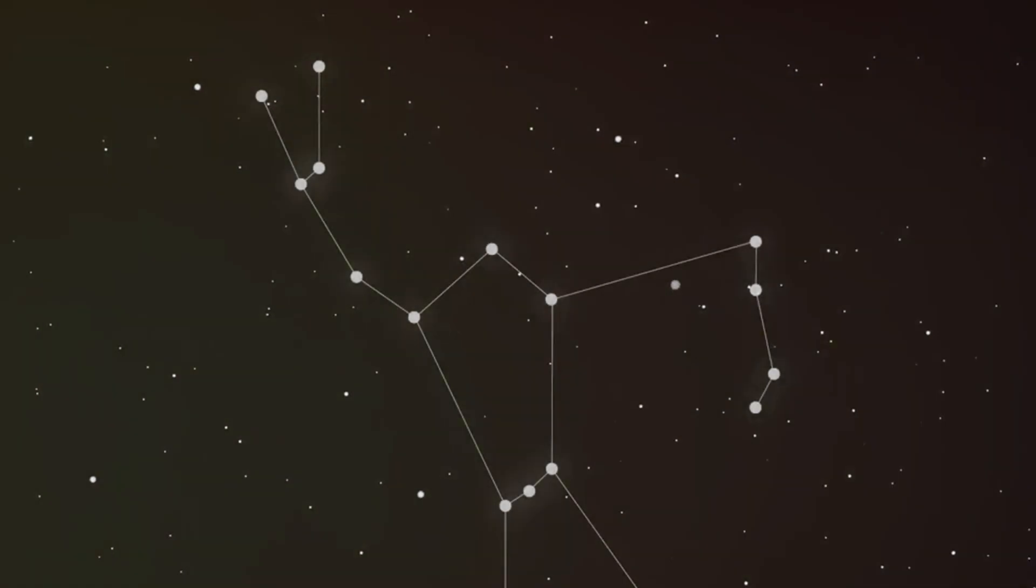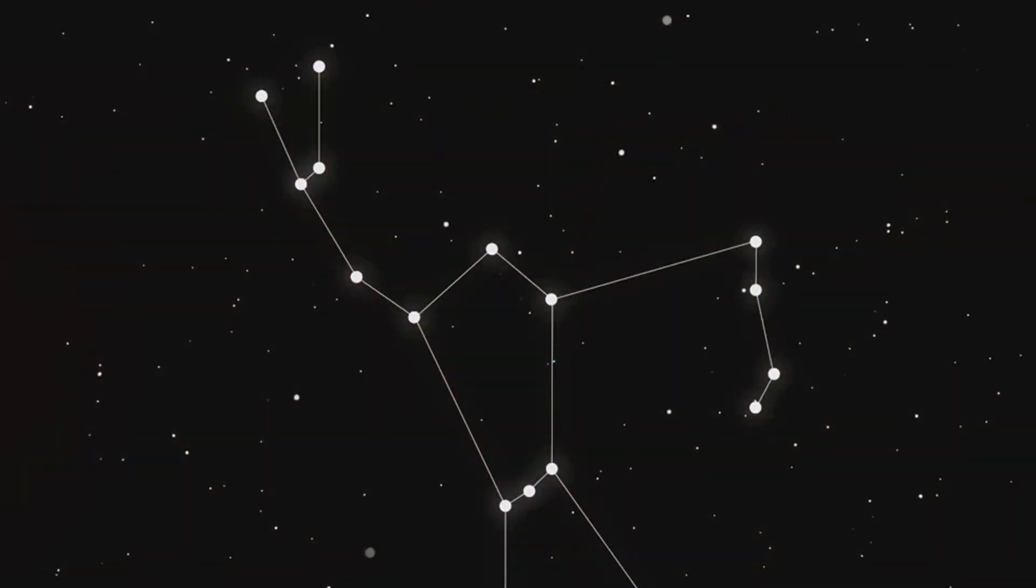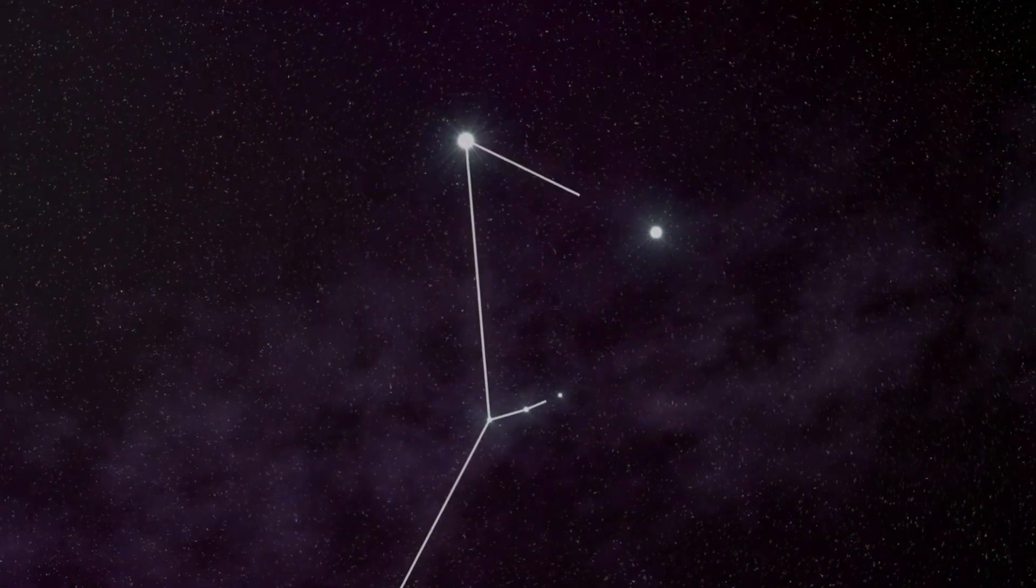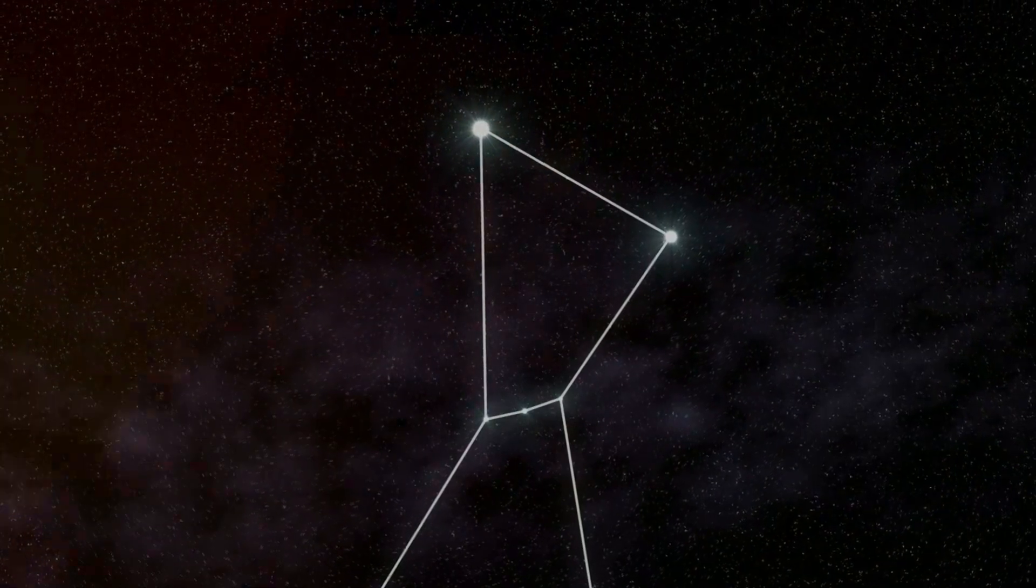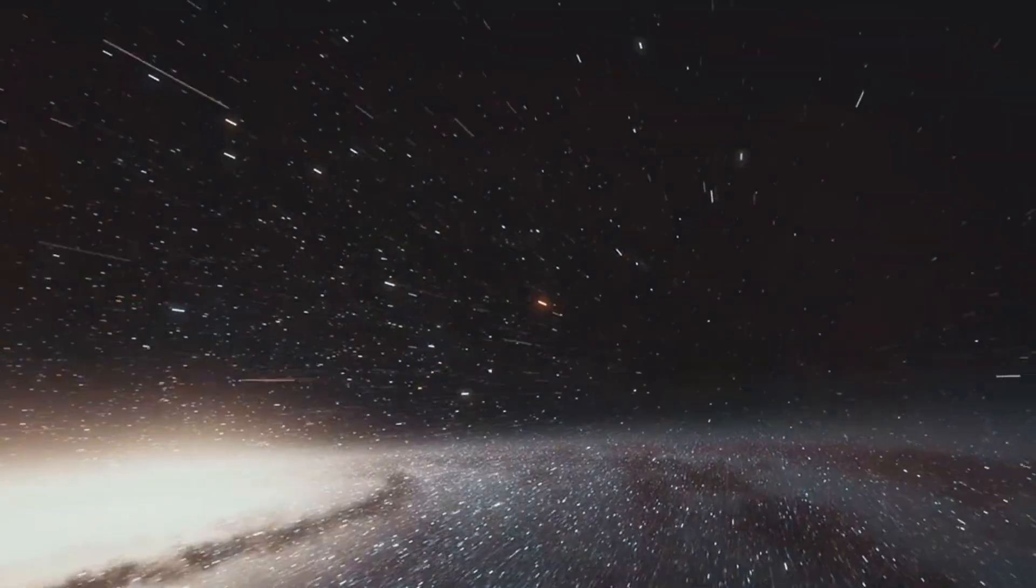Now let's talk about constellations. These are patterns of stars in the sky that have been recognized and named by ancient cultures. Some of the most famous ones include Orion, the Hunter, and Ursa Major, the Great Bear. However, constellations are not just beautiful cosmic art, they've served as celestial maps guiding travelers and sailors for thousands of years.